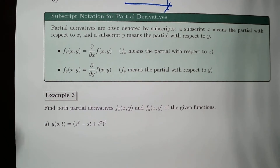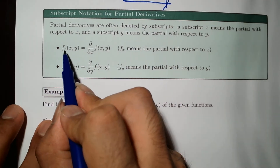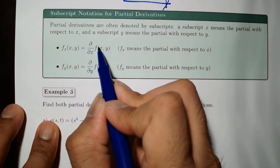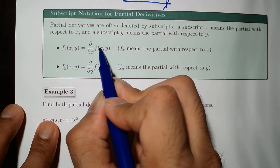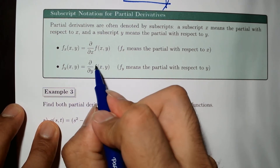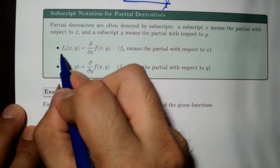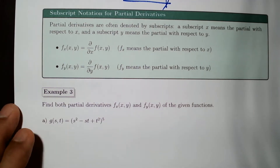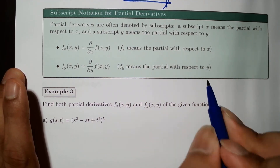A note on notation: we have both the Jacobian notation — partial f over partial x — and the subscript notation f_x. These mean the same thing: f_x means the partial derivative with respect to x, and f_y means the partial derivative with respect to y.